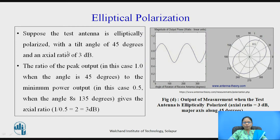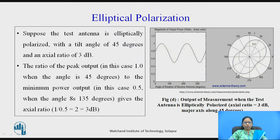For elliptical polarization, if the test antenna is elliptically polarized — assumed to be 45-degree elliptically polarized with an axial ratio of 3 dB — the axial ratio is the ratio of the peak output to the minimum output power. If the peak output is 1 and the minimum output is 0.5, the ratio is 2, which in decibels is 3 dB. The resulting plots will be elliptical in shape, and from this plot we can confirm that the test antenna polarization is elliptical.